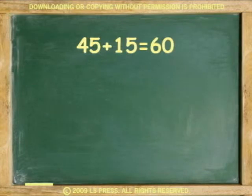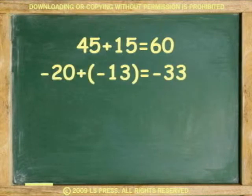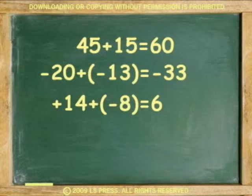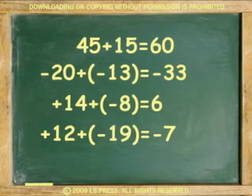From the use of the number line, we learned that adding two positive integers gives a positive answer: 45 plus 15 equals 60. Also, adding two negative integers gives a negative answer: negative 20 plus negative 13 equals negative 33. And adding a negative and a positive number gives an answer that could be either positive or negative, depending on whether the larger number is positive or negative. For example: positive 14 plus negative 8 equals 6, and positive 12 plus negative 19 equals negative 7.